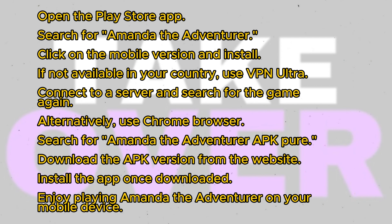If the app isn't available in your country, return to the Play Store main menu and search for VPN Ultra in the search bar. Install the VPN Ultra app on your device and connect to any server. After connecting, return to the Play Store, search for the game again and download it.